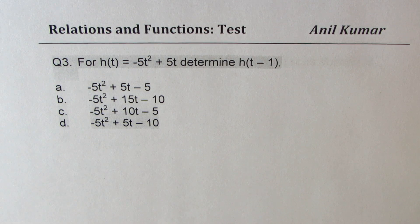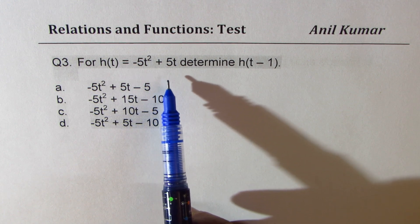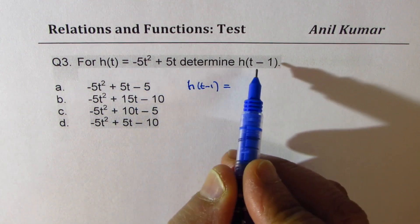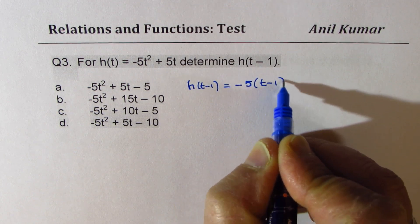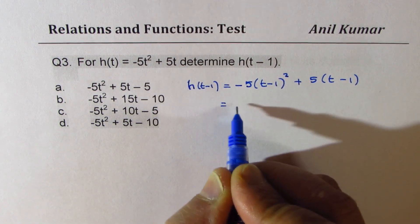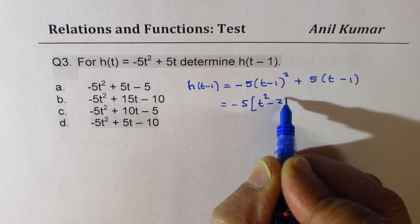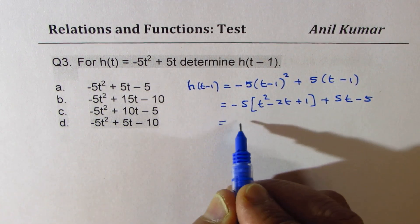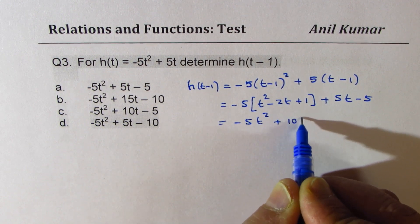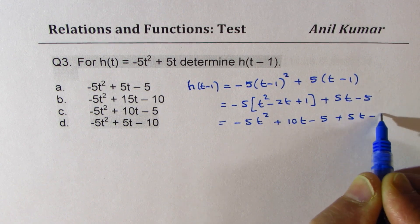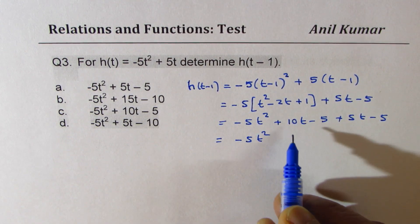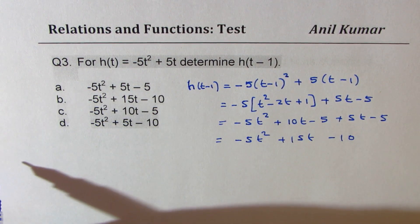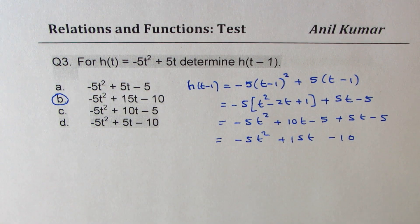Question number three: for h(t) = -5t² + 5t, determine h(t - 1). Replace t with (t - 1): -5(t - 1)² + 5(t - 1). Expanding: -5(t² - 2t + 1) + 5t - 5 = -5t² + 10t - 5 + 5t - 5. Combining like terms: -5t² + 15t - 10. So option B is the correct answer.